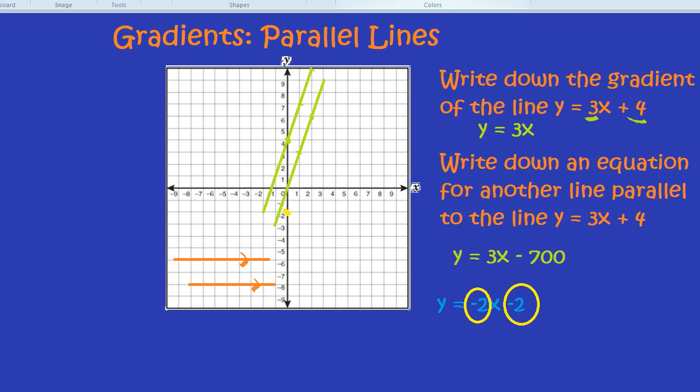What does the gradient of minus 2 mean? It means for every 1 you go right, you go down by 2. If it was positive 2x, that would mean for every 1 you go right, you go up by 2. But minus 2x means for every 1 you go right, you go down by 2. Let's keep drawing that. For every 1 you go right, you go down by 2.